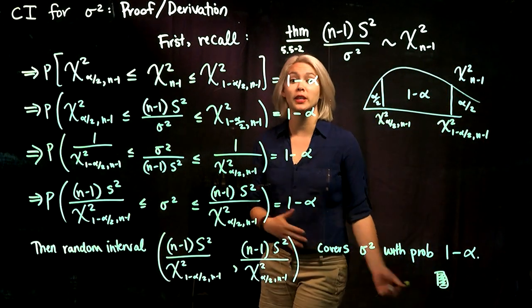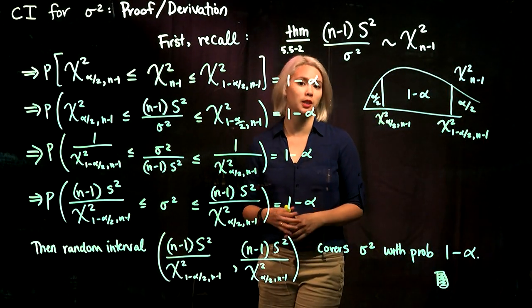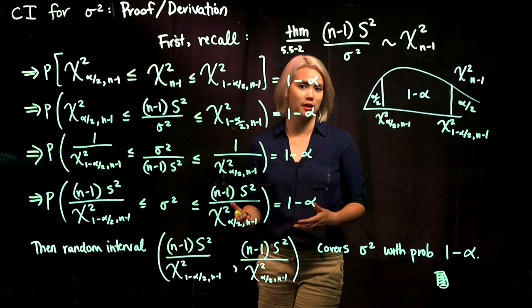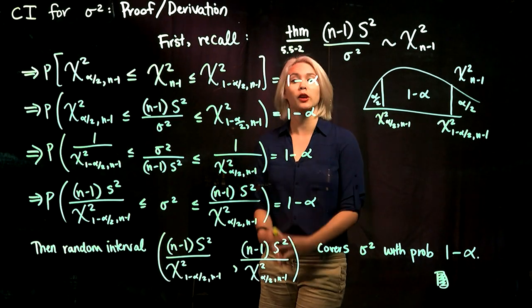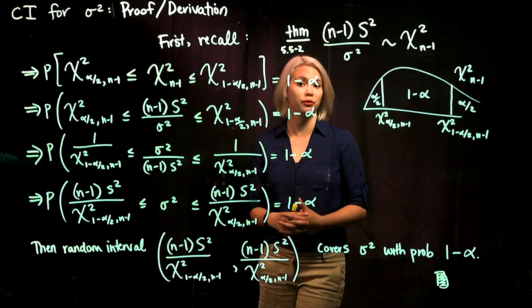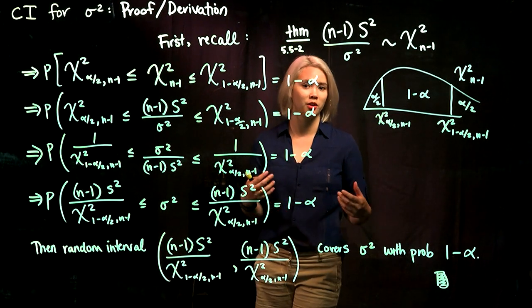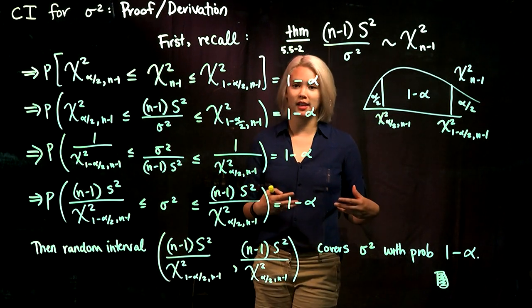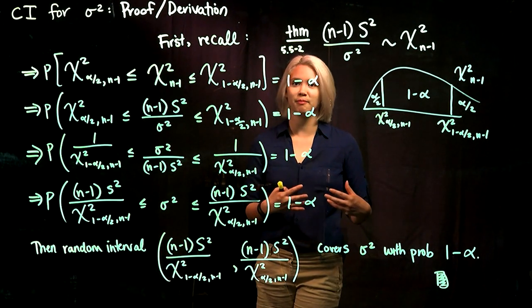In the previous video, I stated what a confidence interval for sigma-squared would be without any proof. And now in this video, we're actually going to prove that that confidence interval would hit our parameter 1 minus alpha of the time.